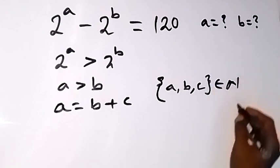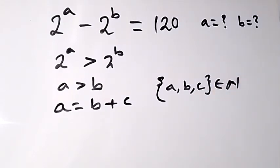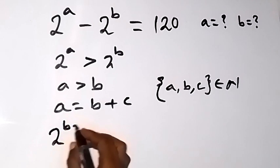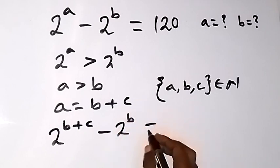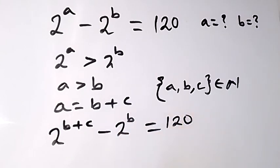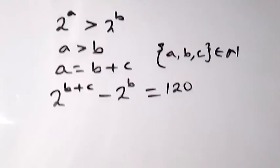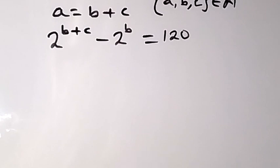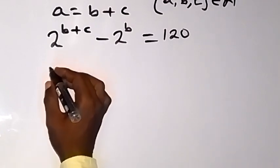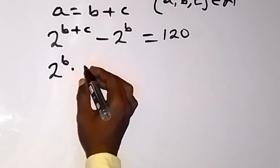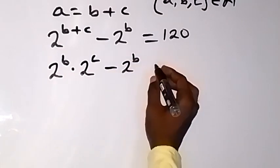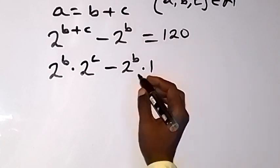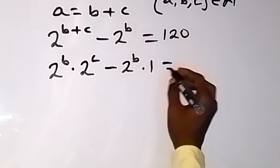So we can replace a with b plus c and rewrite what we are given as 2 raised to power b plus c, minus 2 raised to power b, equals 120. From here we can separate it following the law of indices, and say this will be 2 raised to power b times 2 raised to power c, minus 2 raised to power b — which turns to 1 — equals 120.